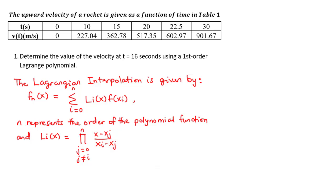The Lagrangian interpolation is given by the function fn of x, equal to the summation of li of x times f of xi from i equals 0 to n, where n is the order of the polynomial function. And li of x is the product of (x minus xj) divided by (xi minus xj), from j equals 0 where j is not equal to i, to n.